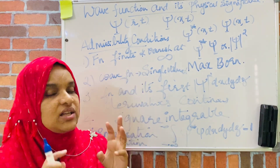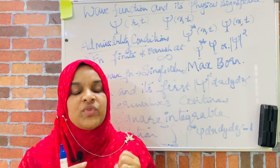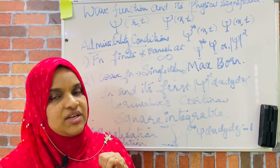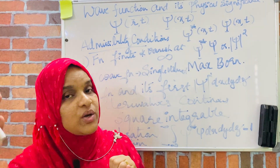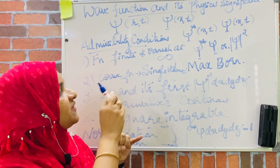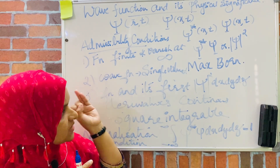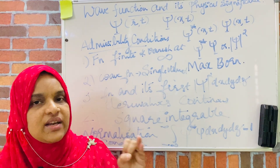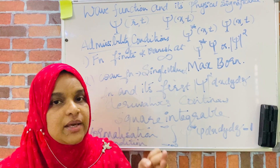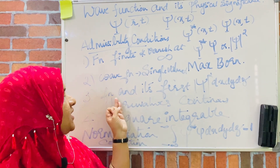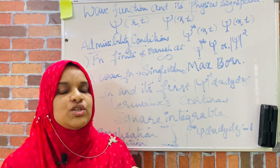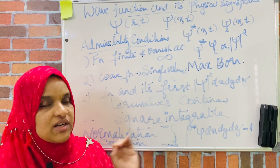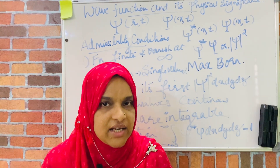The conditions are: the function should be finite and should vanish at infinity, meaning psi should equal zero at infinity. The function should be single valued and should never give two values for the same point. The function and its first derivative should be continuous. And the function should be square integrable.